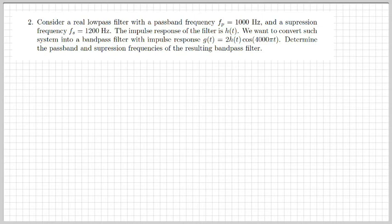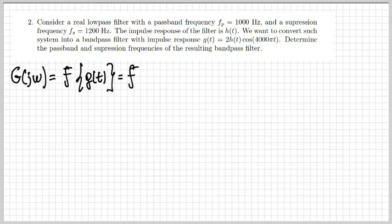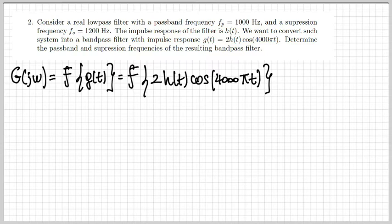Let's move on to the second exercise where we consider a real low pass filter with a certain passband frequency, which is one kilohertz and suppression frequency at 1.2 kilohertz. So this is expressed in Hertz. The corresponding omega, the radians per second are obtained multiplying by two pi. So I want to obtain a certain filter with response g of t. So in the frequency domain, g of j omega is going to be given by the Fourier transform of this g of t. And g of t is expressed as 2 h of t times a cosine. So I'm going to calculate this Fourier transform.